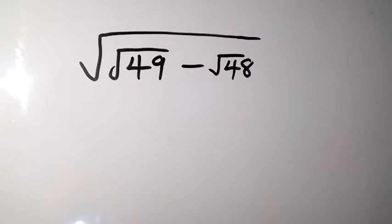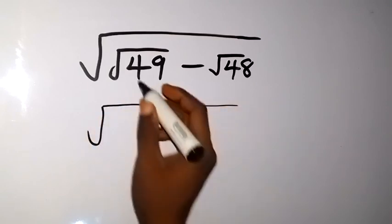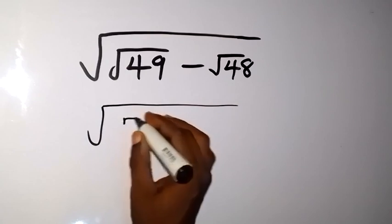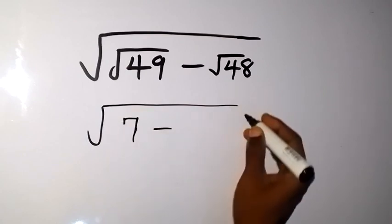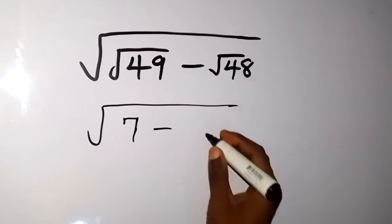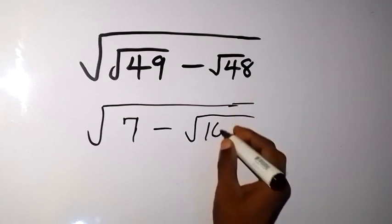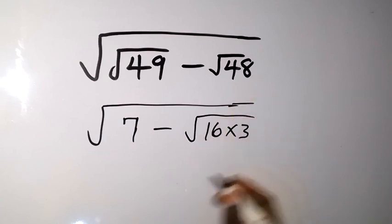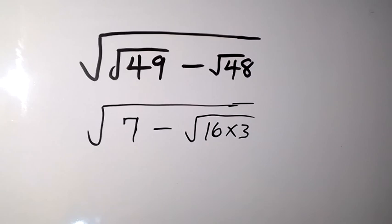From here we can write this again as root root 49. Here it can be written as 7, then minus root 48. We can break it down because we can get a perfect square, which is 16, then times 3, because 16 times 3 will give us 48.